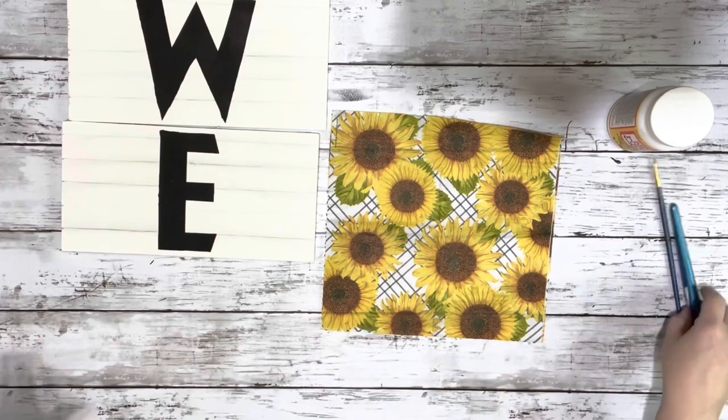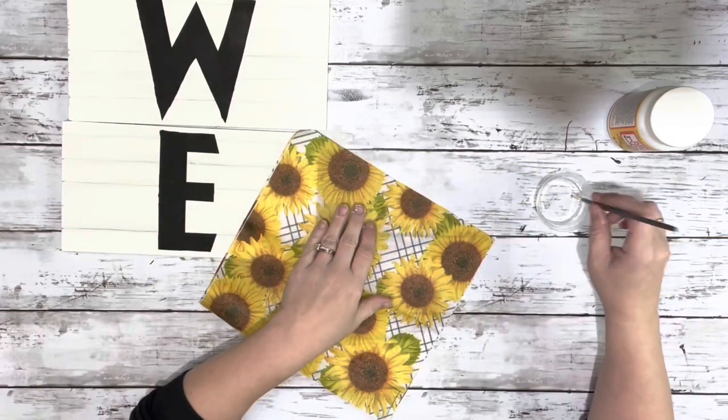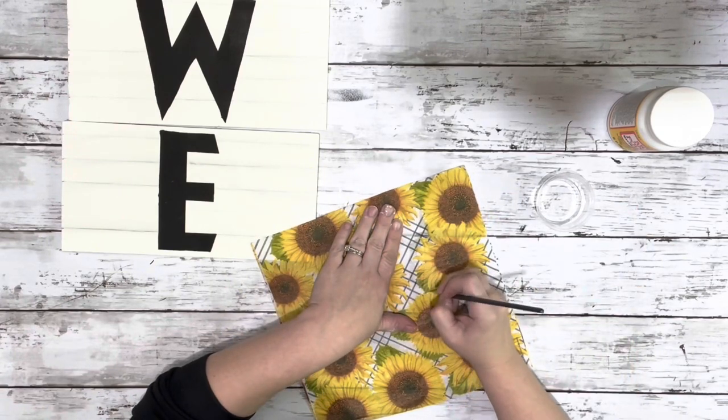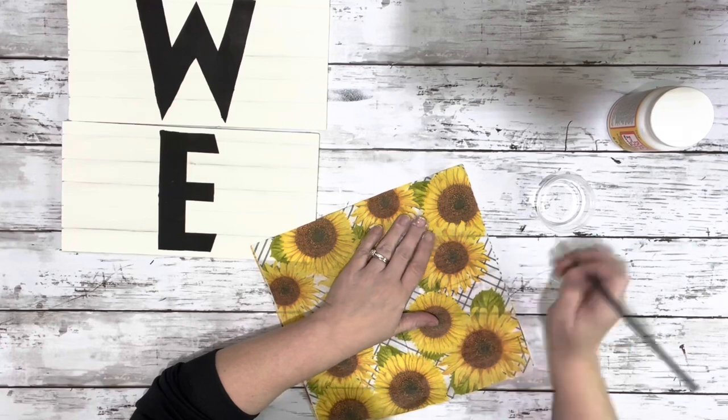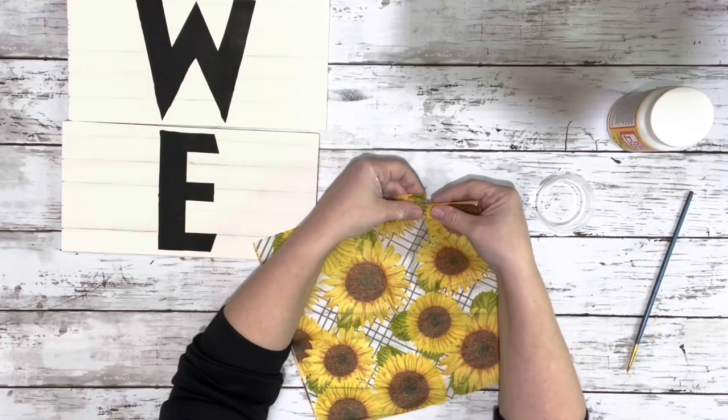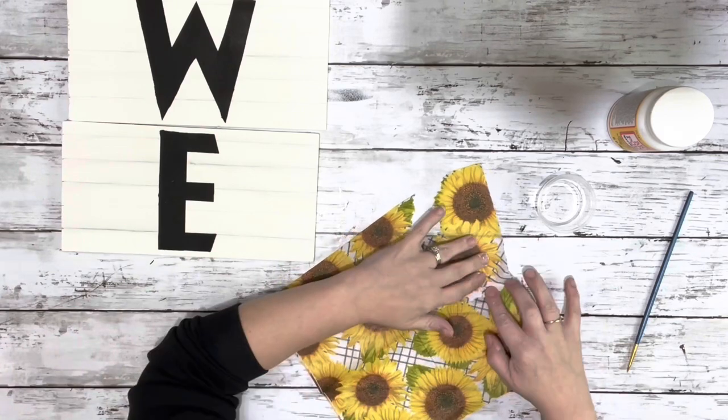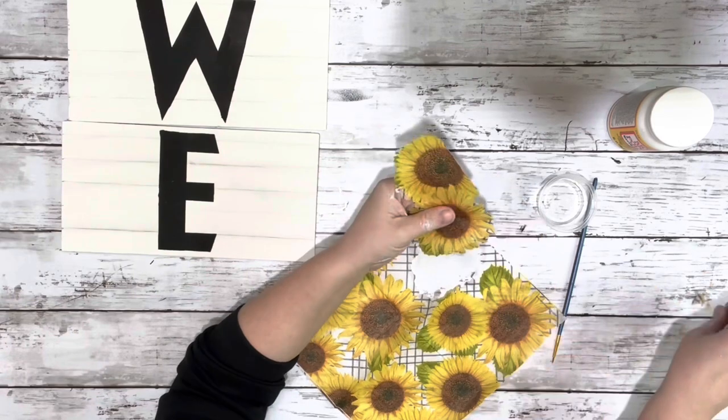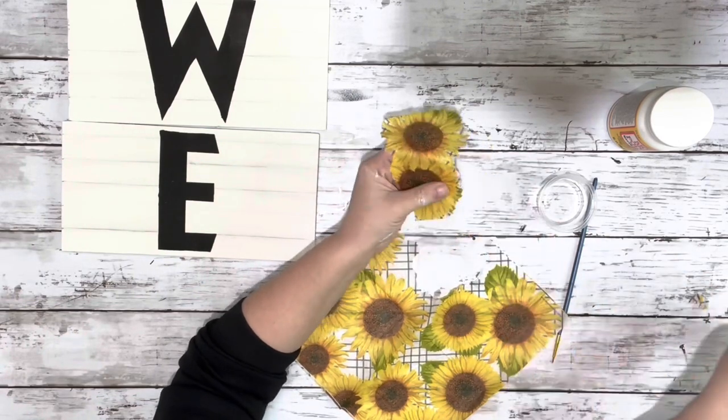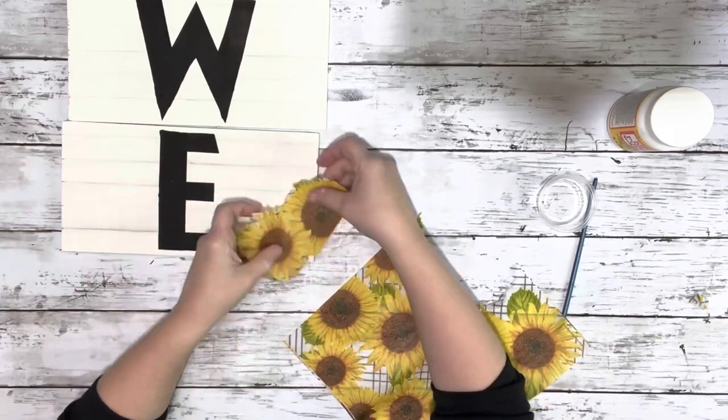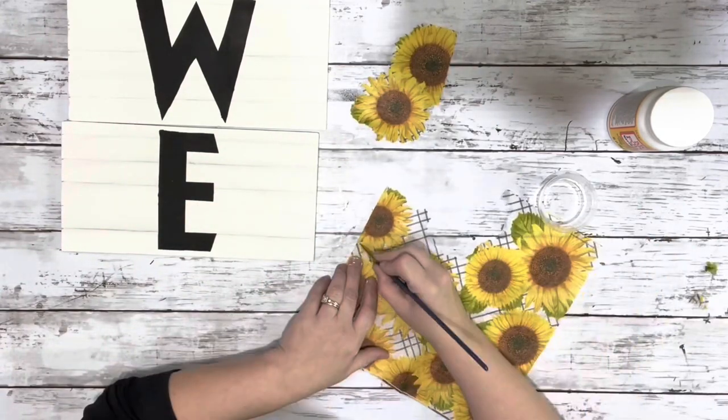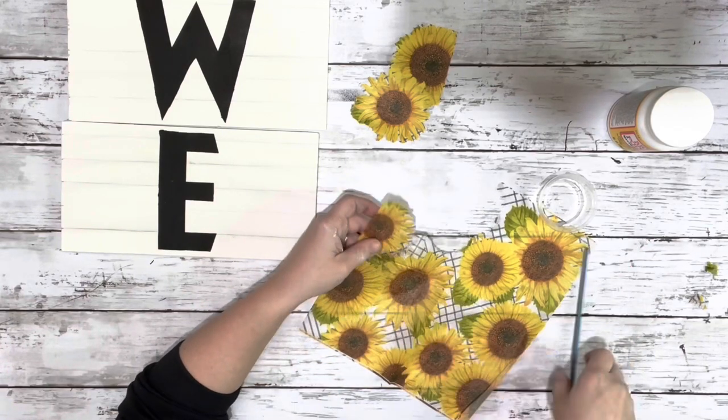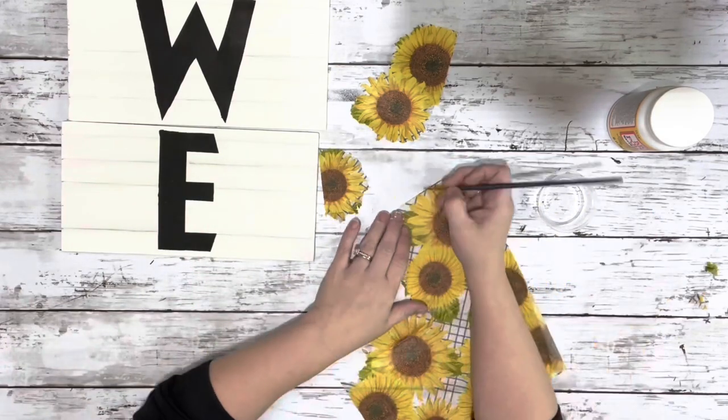After I had all of the letters on each of the pieces of wood, I took my napkins, removed the second layer, and then used some water on a paintbrush to trace out the sunflowers, and then just pull apart the pieces. It tears nice and easy with the water. So, I just removed a bunch of the sunflowers. I'll be putting a couple different pieces of the napkin on each of the little pieces of plank wood. I ended up using two napkins to get enough sunflowers to cover them.